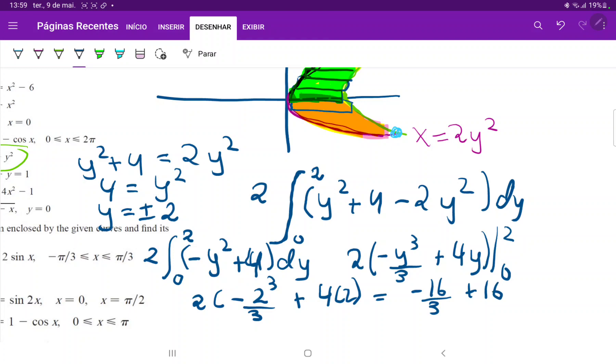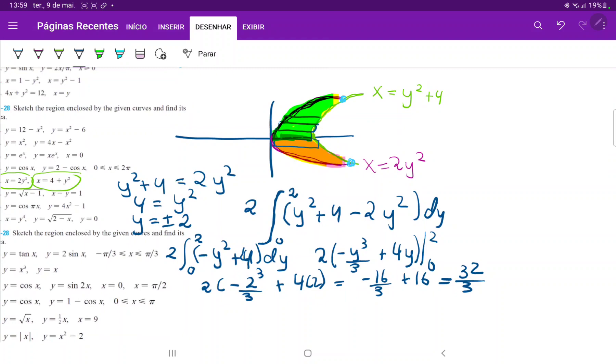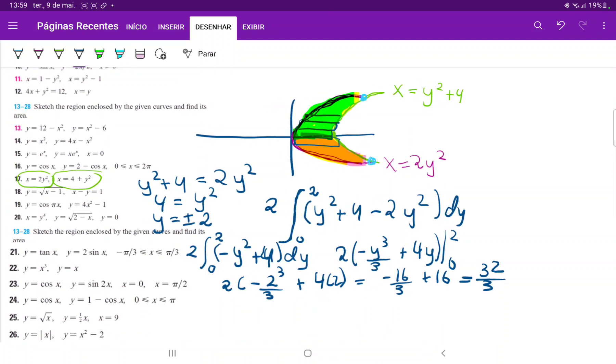So to wrap this up, our area is, this is equal to 32 over three. So let me just zoom out so you can see the big picture. We just drew these curves and then we integrated it with respect to y.